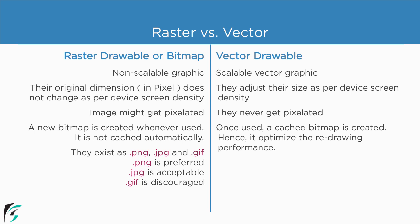In Android, raster graphics exist as PNG, JPEG, and GIF files, of which the most preferred format is PNG. JPEG format is quite acceptable, but using GIF within the application is highly discouraged. On the other hand, vector drawables exist as XML files within the application.